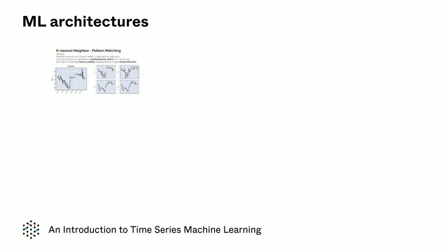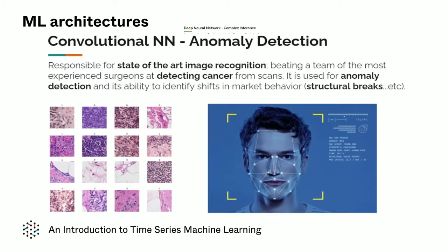K-nearest neighbor models help find historical events that are mathematically similar to the current one. Deep neural networks aid in modeling the complex market microstructure.